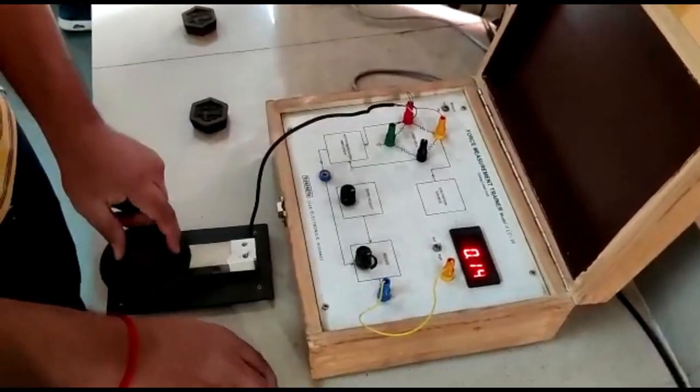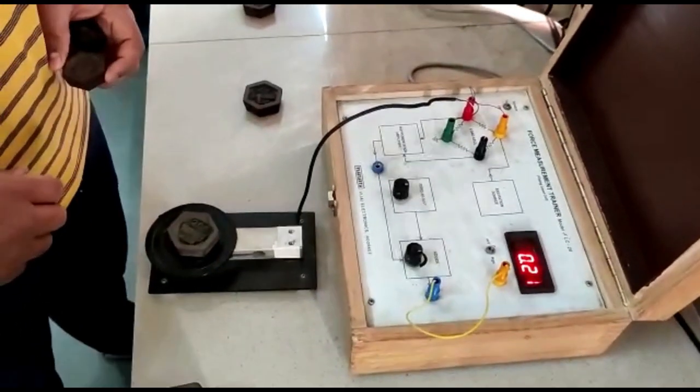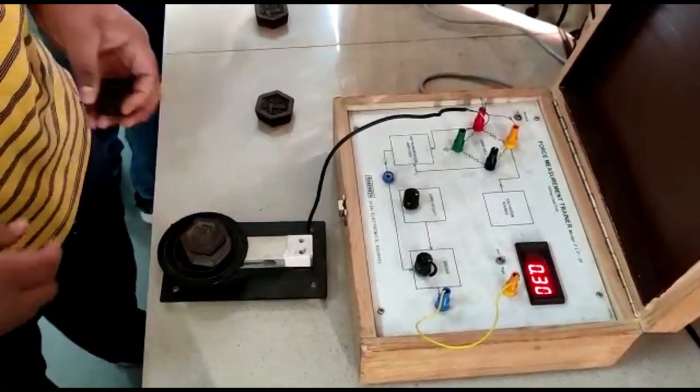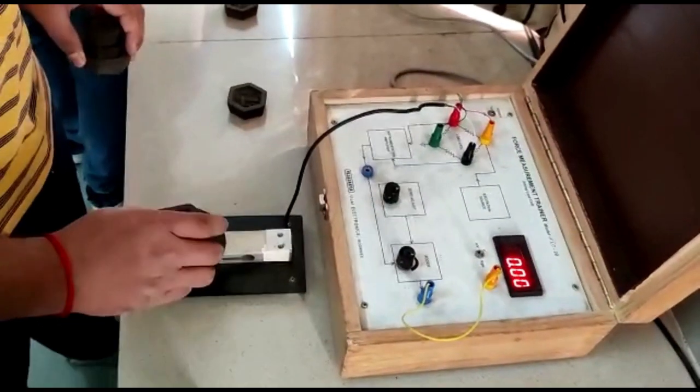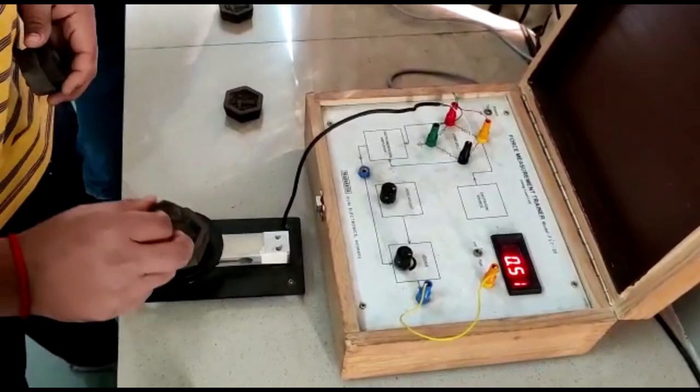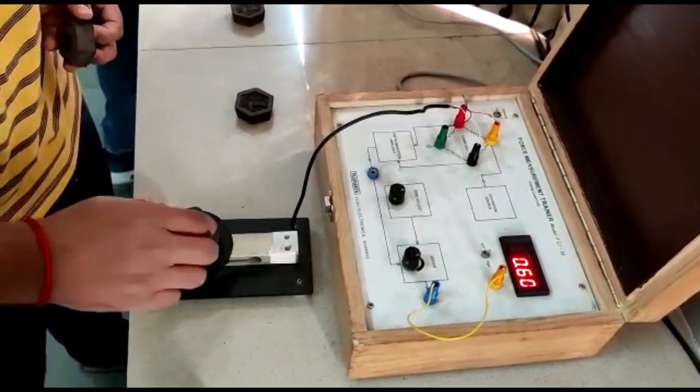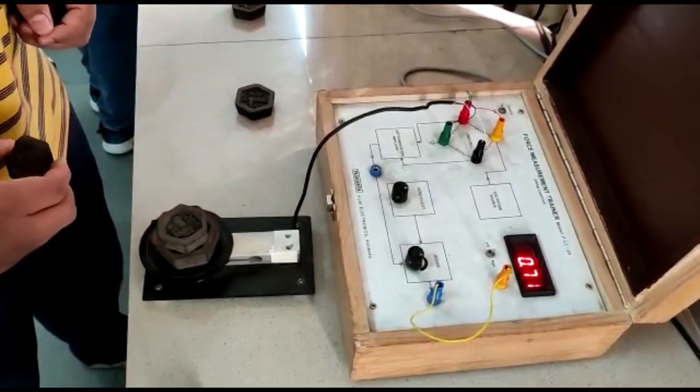Now we start placing our weights to take down the readings. We place the weights in an ascending order from 100 grams to 1 kg and the display output is set to kgs and now we can observe here an increase in output as we increase the weights.